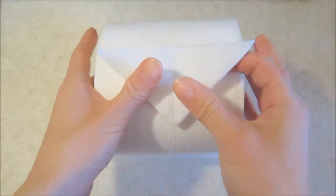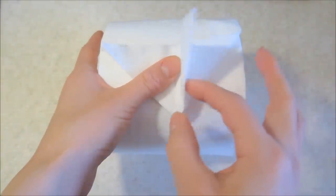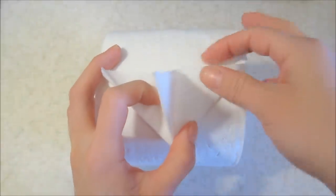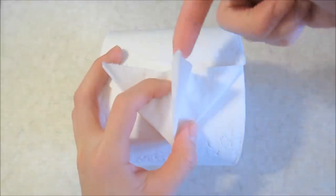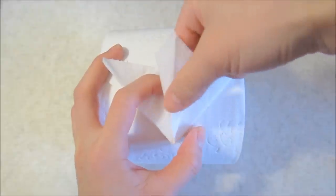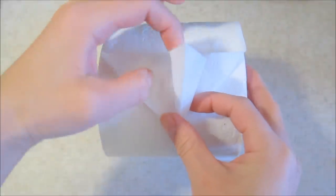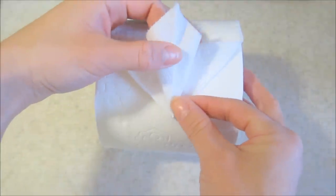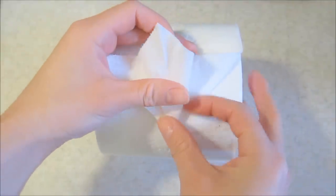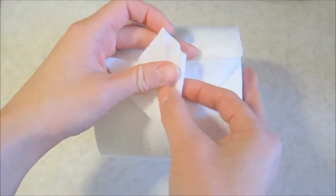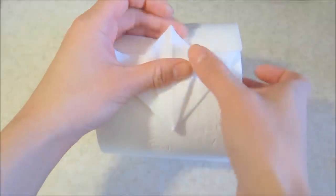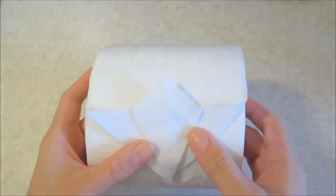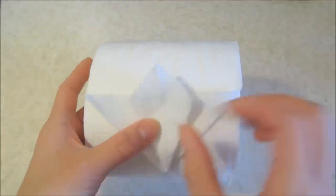Now we're going to take the right flap over here and do a squash fold. We're going to stick our hand or finger in here and then squish it down to make a shape that looks like this. Once we've done that,